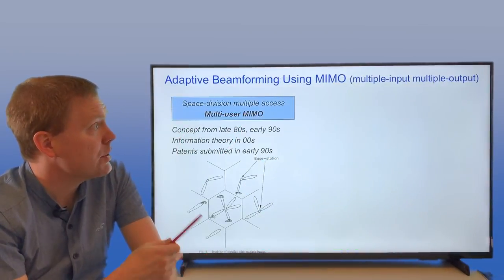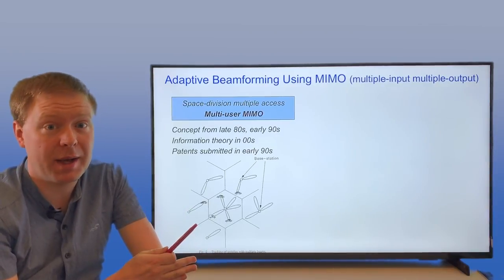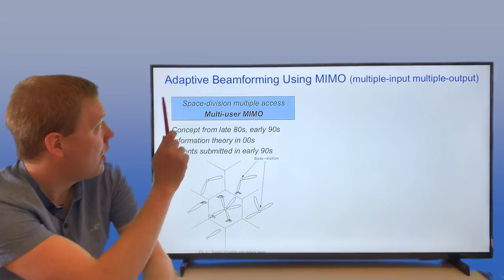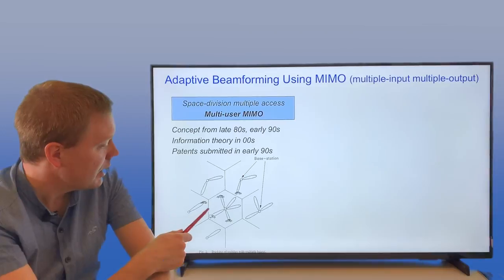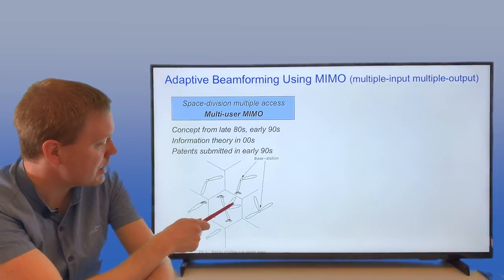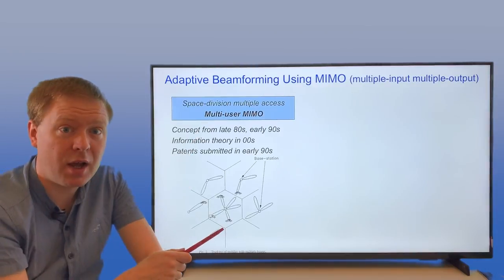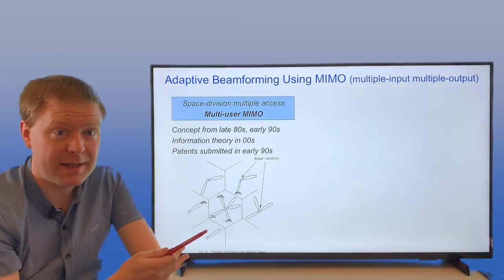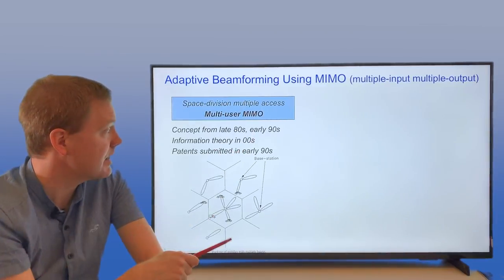Adaptive beamforming using MIMO, or multiple input multiple output, is something that people have been talking about for quite a while. Earlier it was called space division multiple access. Here's from a paper from 1990, where you see transmitters sending beams in different directions towards cars. The concept of using many antennas for adaptive beamforming in communications goes back to the late 80s and early 90s.